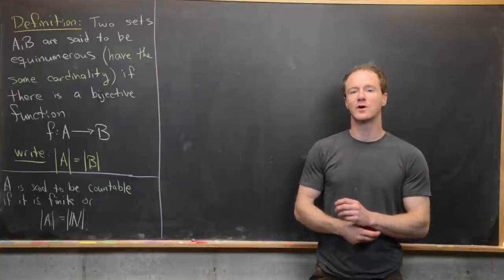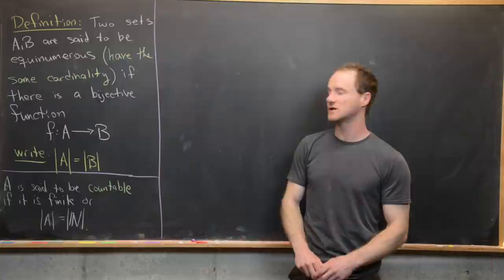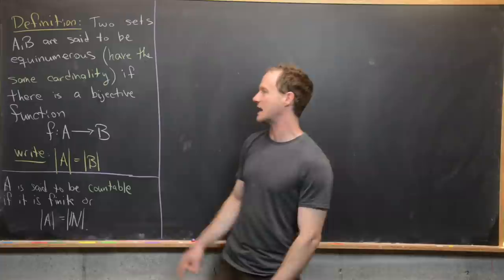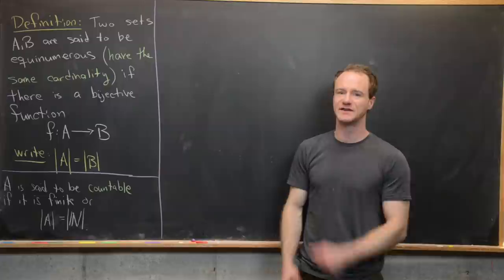In this video we're going to look at the notion of cardinality of a set and equinumerosity of two sets. So let's look at a definition first. Two sets A and B are said to be equinumerous, or in other words they have the same cardinality, if there is a bijective function F that goes from A to B. Recall that a bijective function is one that is one-to-one and onto — in other words, injective and surjective.